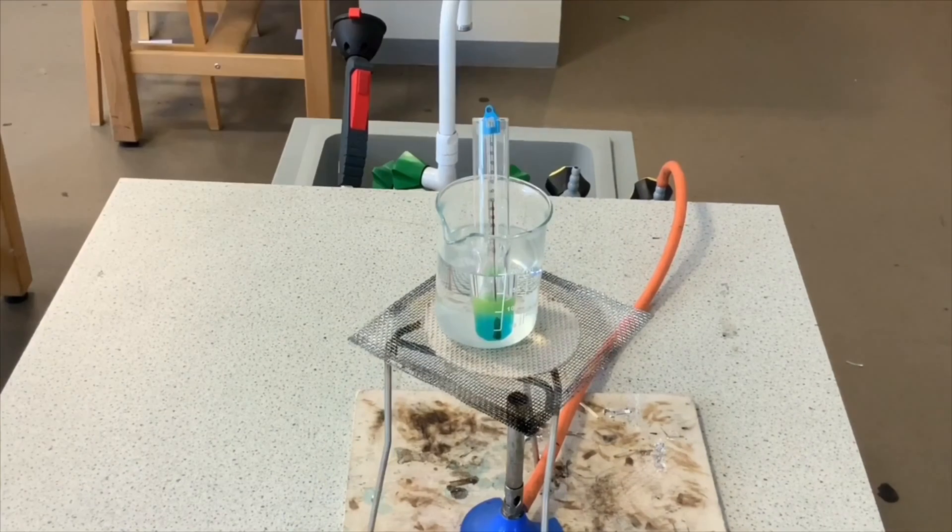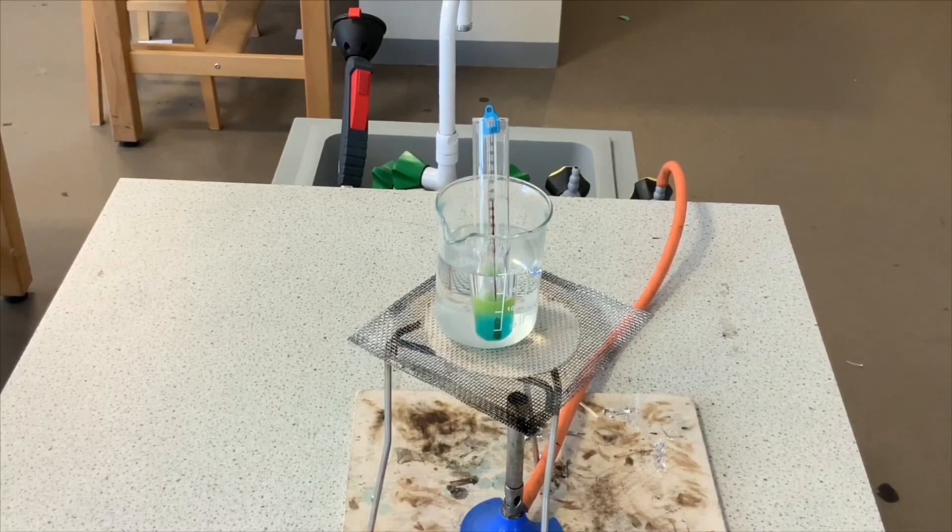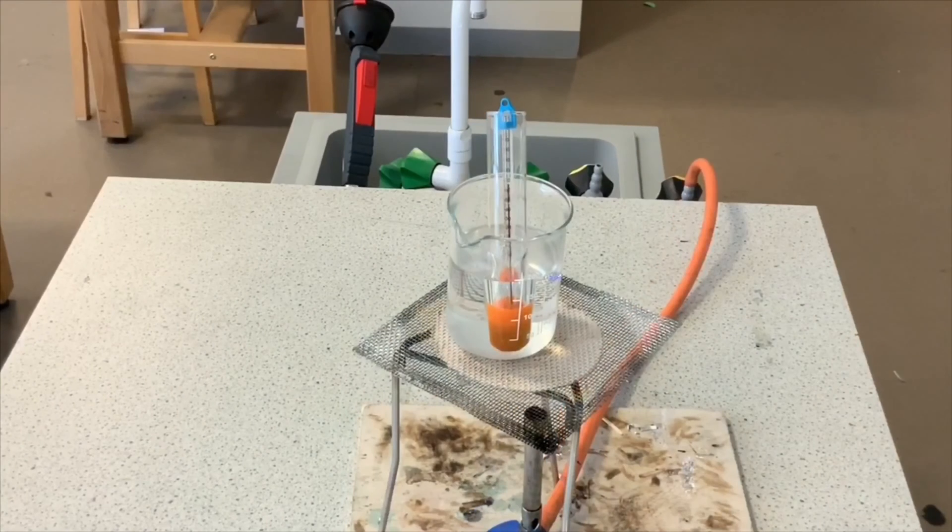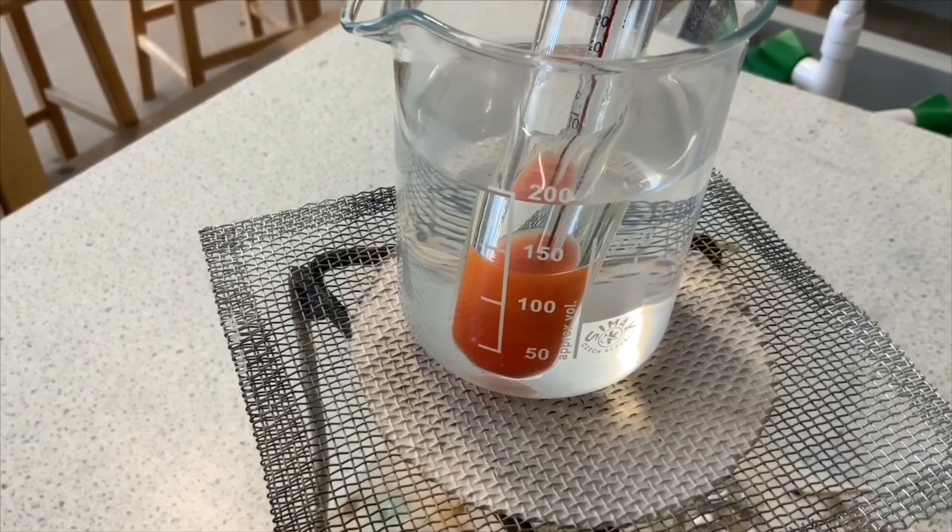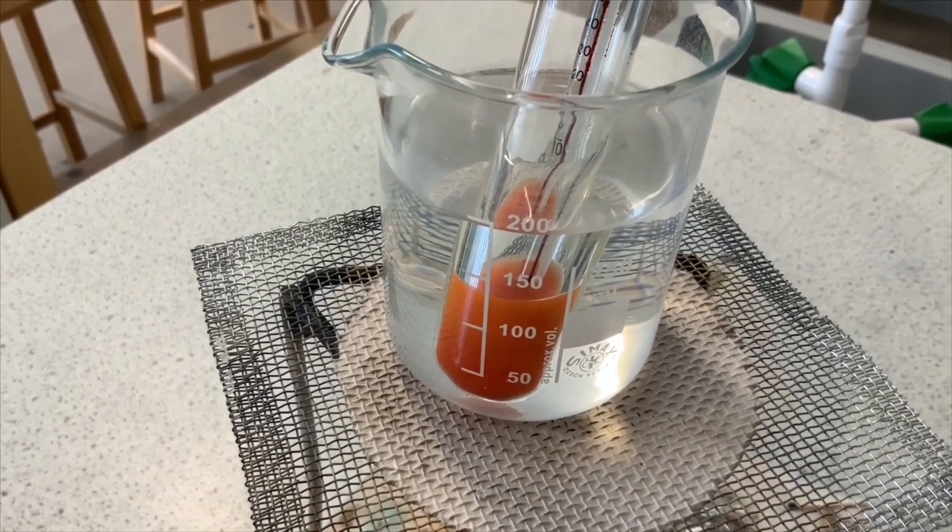If we leave it for a bit longer and that green layer starts to change, so it goes to like an orangey color, that means there's a moderate amount of sugar actually there. If it starts to go more of a brick red color, and you can see it changing here in my video, that means there's actually quite a lot of sugar present.